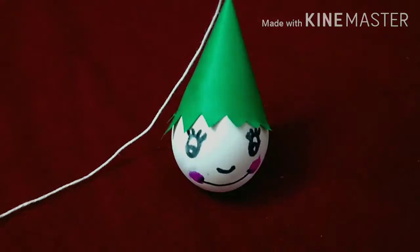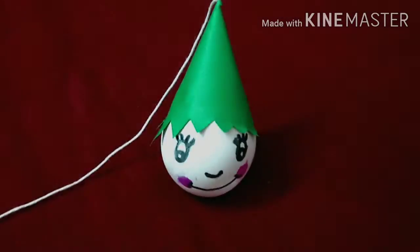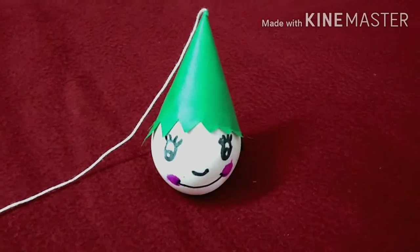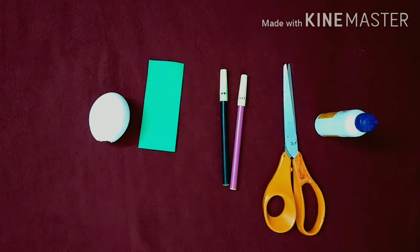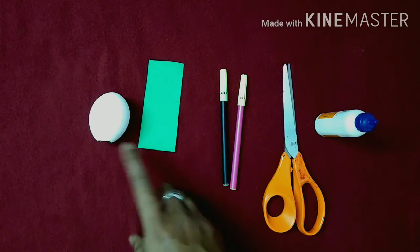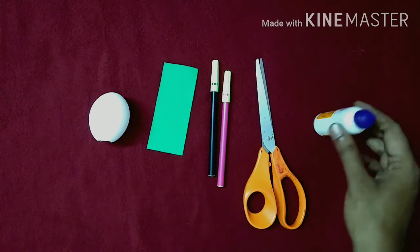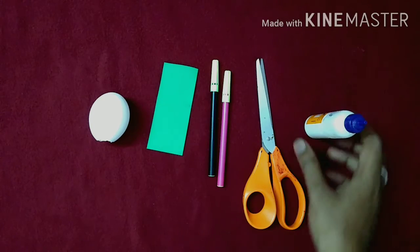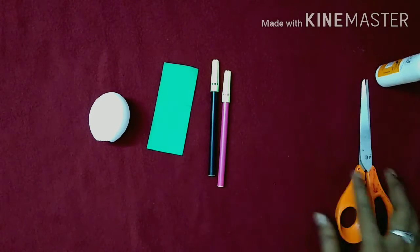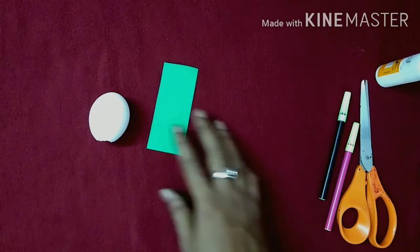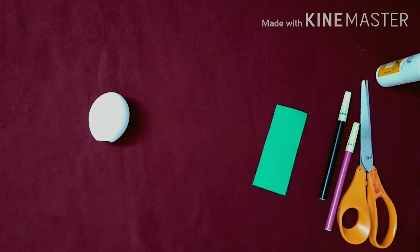Hi, hello friends! How are you? Today I will teach you Robin Hood with eggshell. Okay, now we need some materials. First we need eggshell, green color paper, sketch pen, scissors, glue, and thread also. Okay, let's start our class. First, take one eggshell.